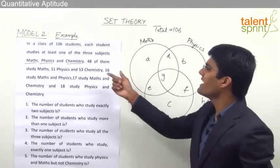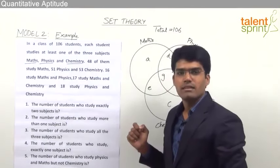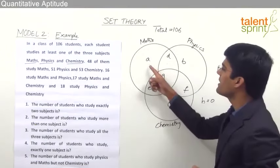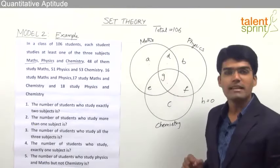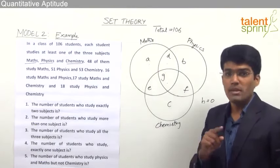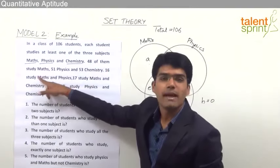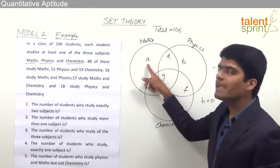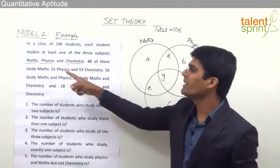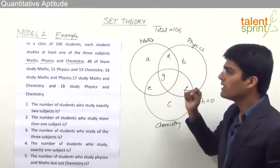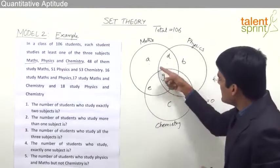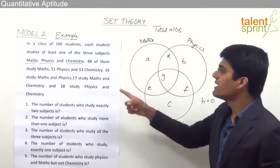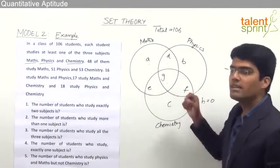48 of them study Maths, meaning the complete Maths circle — regions A plus D plus E plus G — equals 48. Note: it says 48 study Maths, not 48 study only Maths. Had the word 'only' been given, we would take A equals 48. Because 'only' is not there, the complete circle is 48. Similarly, 51 study Physics means the complete Physics circle — all 4 regions — equals 51. And 53 study Chemistry means the total of that circle equals 53.